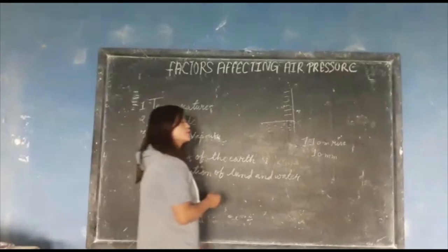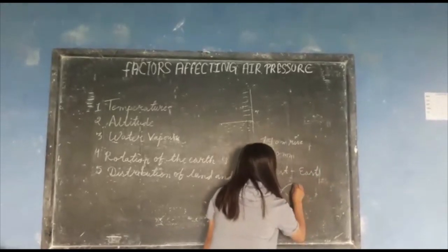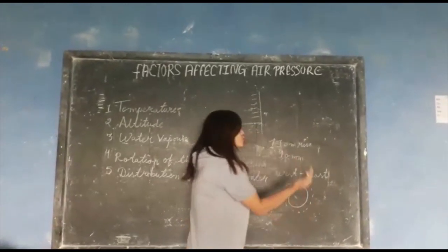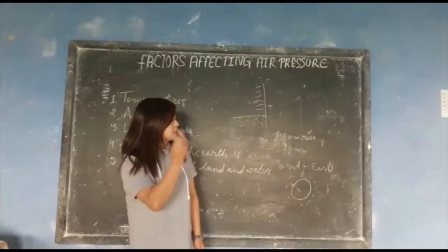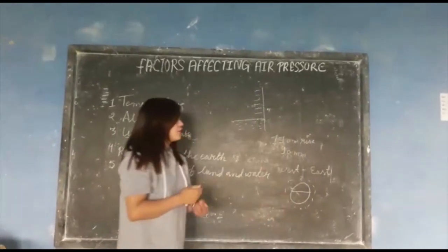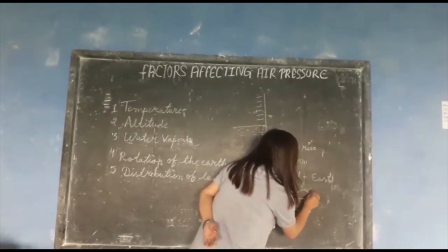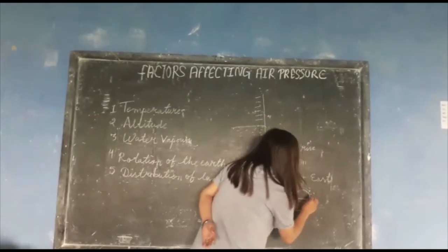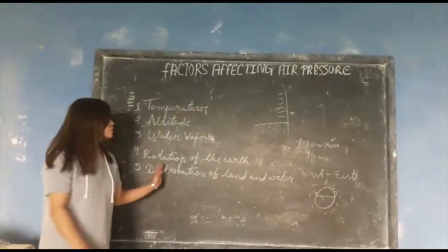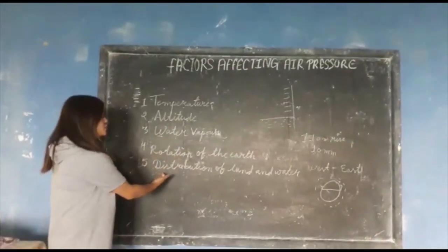The fourth factor is rotation of the earth. Our earth rotates from west to east. As our earth rotates, the air which is present over our earth also rotates along with the earth. Therefore, centrifugal force is created more at the equator. Because of this centrifugal force, air from the equatorial region and air from the polar region would converge at the subtropical high pressure belt, creating high pressure there. This is how the rotation of the earth affects air pressure.